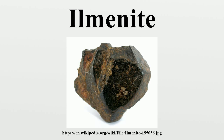Ilmenite is ultimately converted into pigment-grade titanium dioxide via either the sulfate process or the chloride process. Sulfate process plants must utilize low-vanadium ilmenite, as vanadium is a penalty element. Titanium dioxide pigment can also be produced from higher titanium content feedstocks such as upgraded slag, rutile and leucoxene via a chloride acid process. Sulfate and chloride process pigment tends to be used for lower and higher quality applications respectively, with more producers preferring the chloride process.